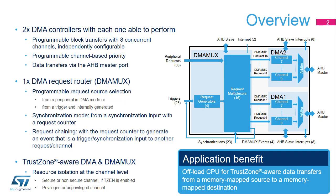STM32L5 DMA features include two DMA controllers. For each DMA controller, programmable block transfers with eight concurrent channels are available, each independently configurable, with programmable channel-based priorities. Data transfers are via the AHB master port connected to the bus matrix. There is also a DMA MUX request router with programmable request source selection, either from a peripheral in DMA mode or from a trigger internally generated.